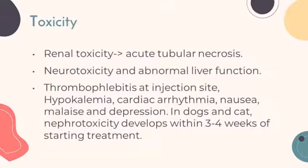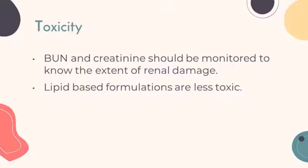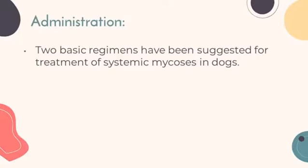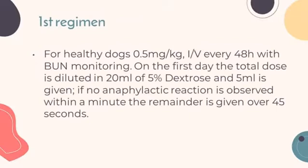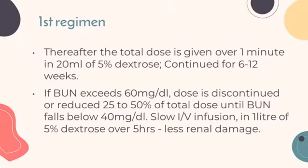In dogs and cats, nephrotoxicity develops within 3 to 4 weeks of starting treatment. For administration, two basic regimens have been suggested for treatment of systemic mycosis in dogs. The first regimen is for healthy dogs: 0.5 mg/kg IV every 48 hours with BUN monitoring. The total dose is given over 1 minute in 20 mL of 5% dextrose.